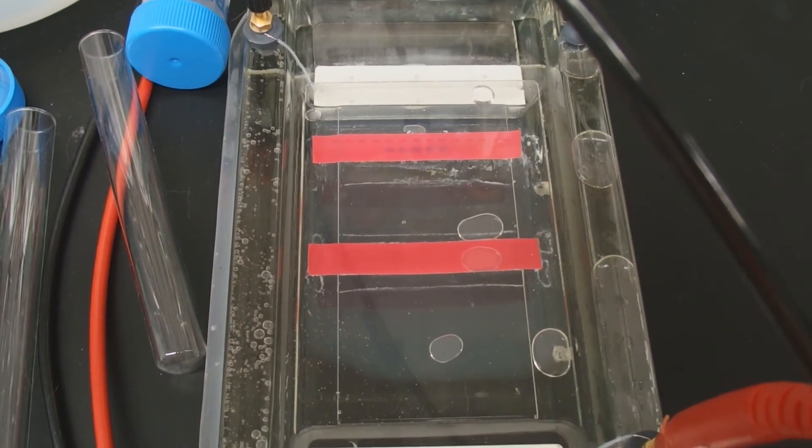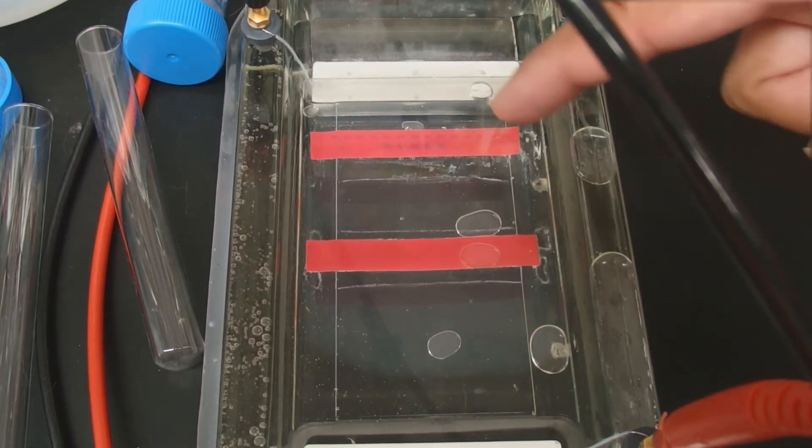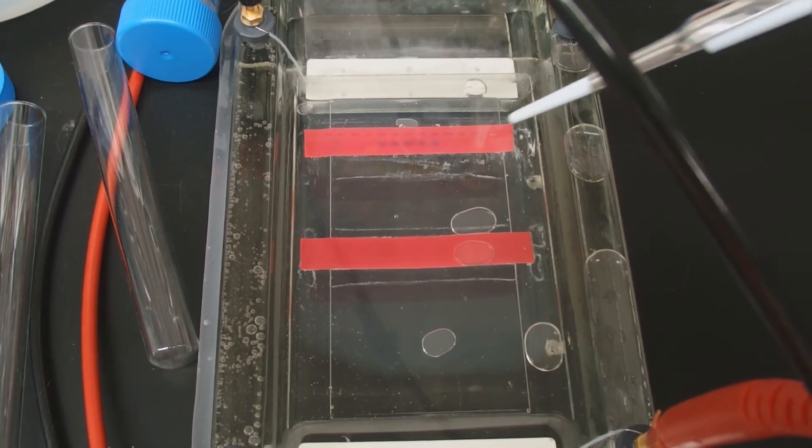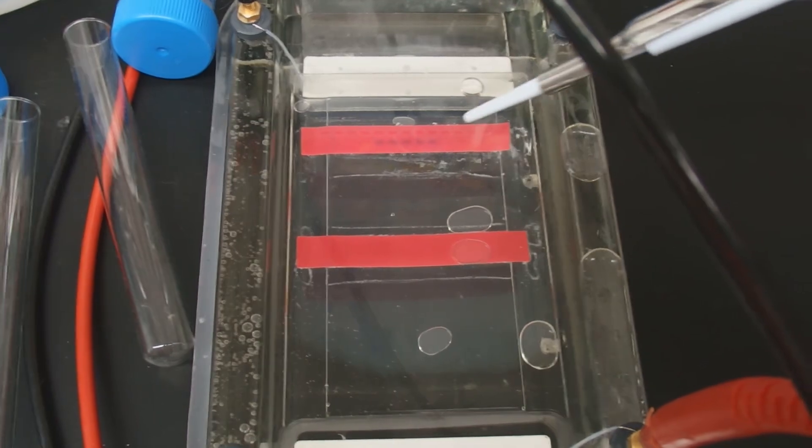That's how you know your agarose gel is running. You'll also notice that right here your DNA loading dye is moving. So we're getting the blue or the green colors moving.